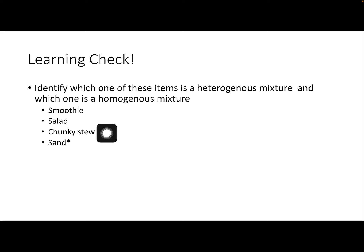A salad is a heterogeneous mixture — we could easily pick out the tomatoes or the lettuce, so it's not uniformly mixed. A chunky stew is also heterogeneous; we could pick things out very easily. Sand, believe it or not, is also a heterogeneous mixture. To separate the salt from the sand, all we have to do is pour water over it with a filter — the salt dissolves and separates from the sand, creating salt water. We didn't need any additional energy, so sand is considered a heterogeneous mixture.